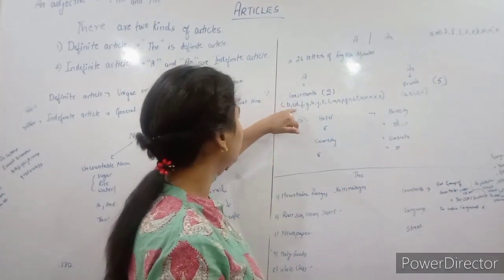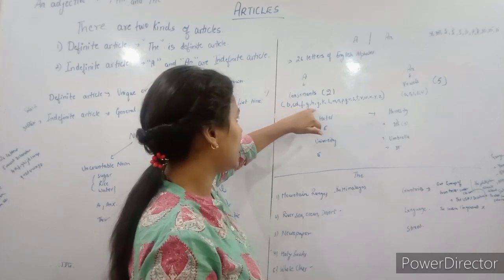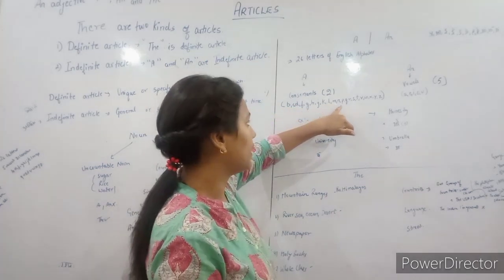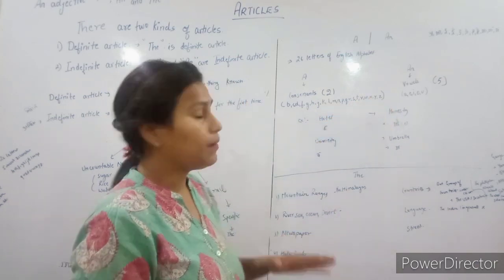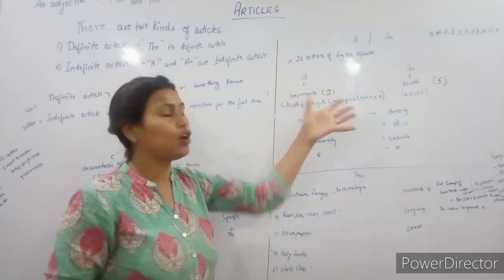And consonants are B, C, D, F, G, H, J, K, L, M, N, P, Q, R, S, T, V, W, X, Y, Z. Now, we will learn how to use a and an, which are our indefinite articles.